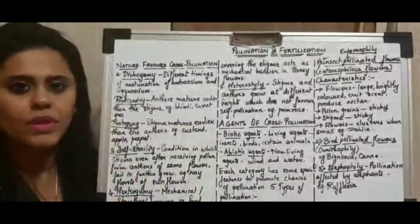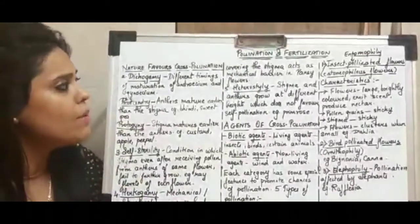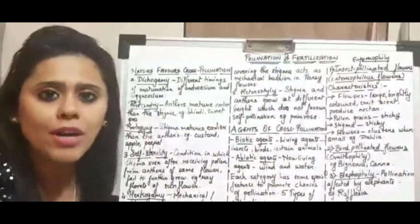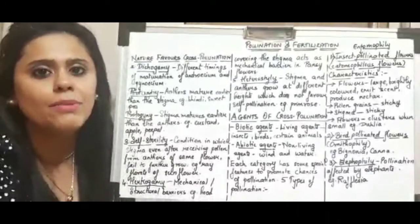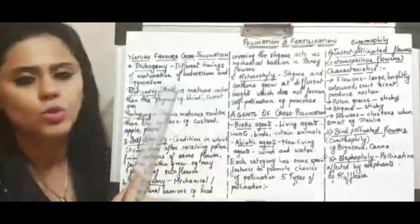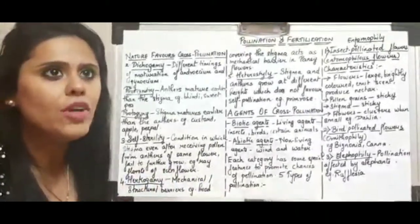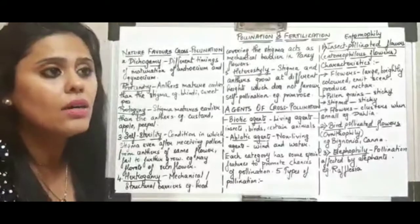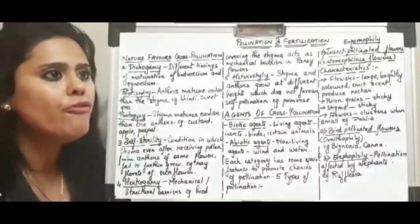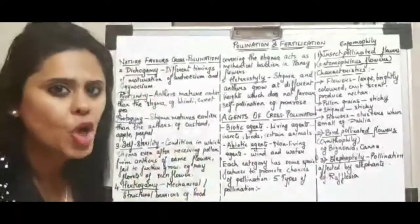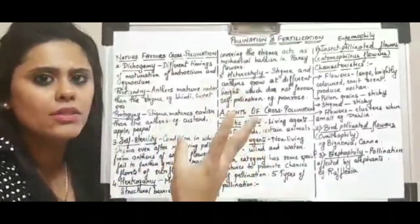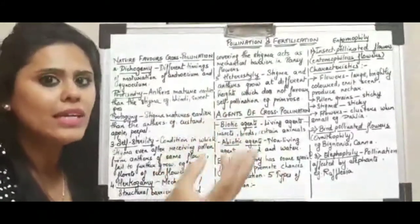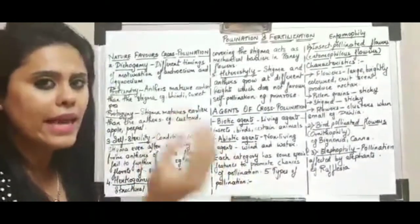What is dichogamy? In simple words, dichogamy means different timings of maturation of the male and female reproductive parts — the androecium and the gynoecium. When the timings of maturation are different, try to understand: when the anthers are mature, they will burst and release the pollen.